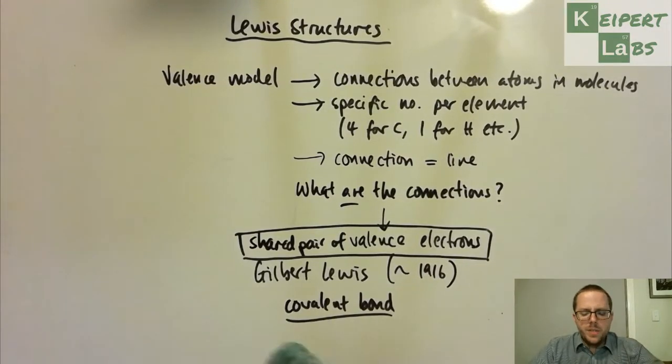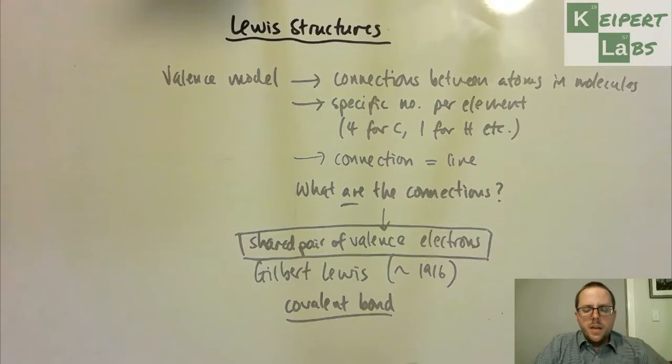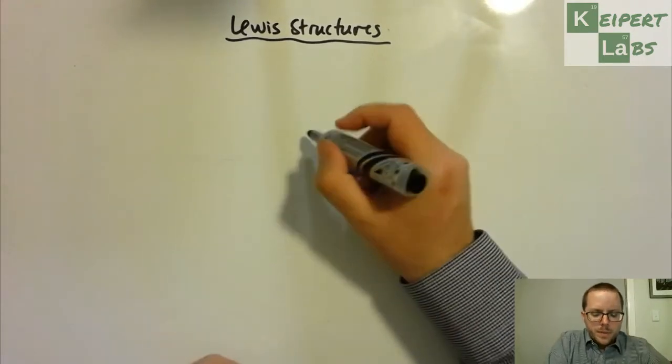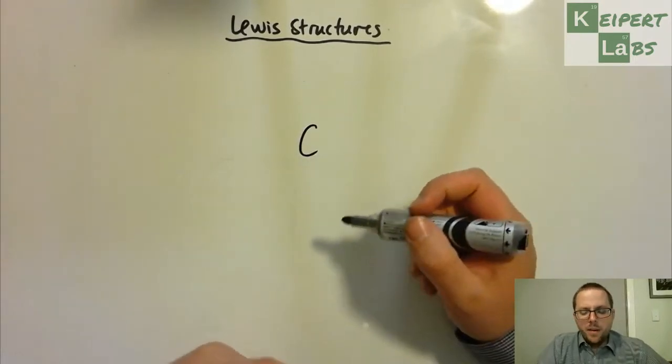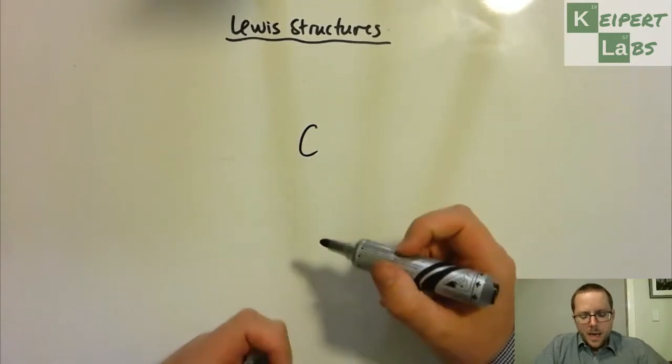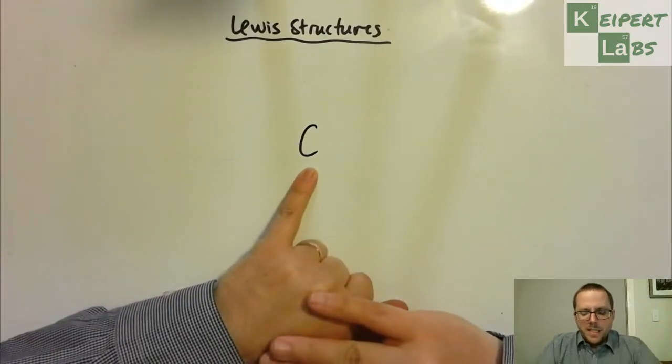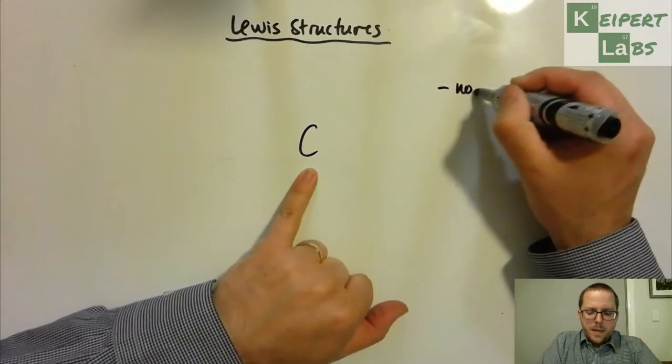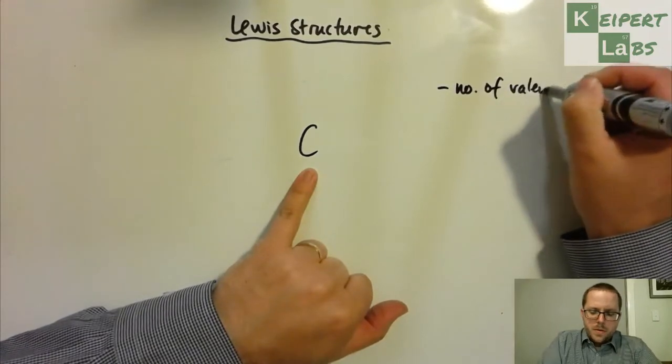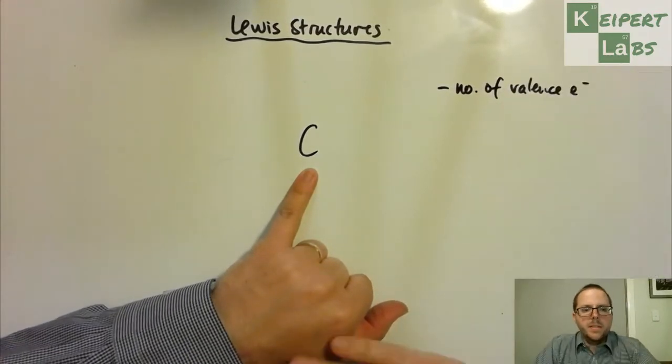And so then what he developed as a way to visualize that was a particular style of drawing chemical structures, which is kind of the same idea that we've been looking at with our structural formulae, but with a bit of extra explaining detail. So what that would involve is that you start by drawing the elements that are involved in your compound. You start by drawing them as a symbol, and then you identify the number of valence electrons that that element has.